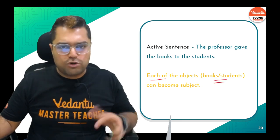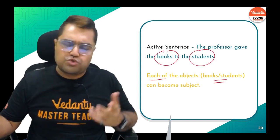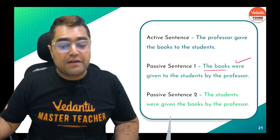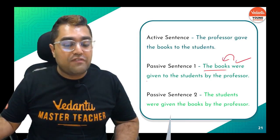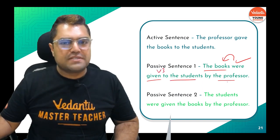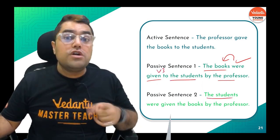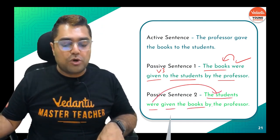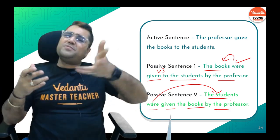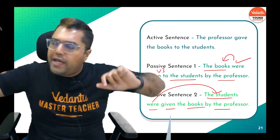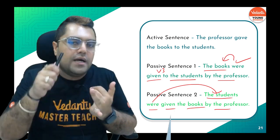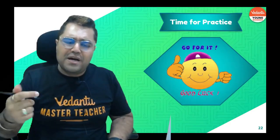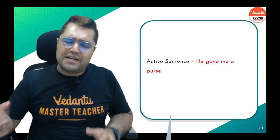Either object can become the subject. So: 'The books were given to the students by the professor' — 'were' because 'books' is plural. OR: 'The students were given the books by the professor' — 'were' because 'students' is plural. Both are completely okay. Don't forget the tense rule, V3, and 'by.' That's all!